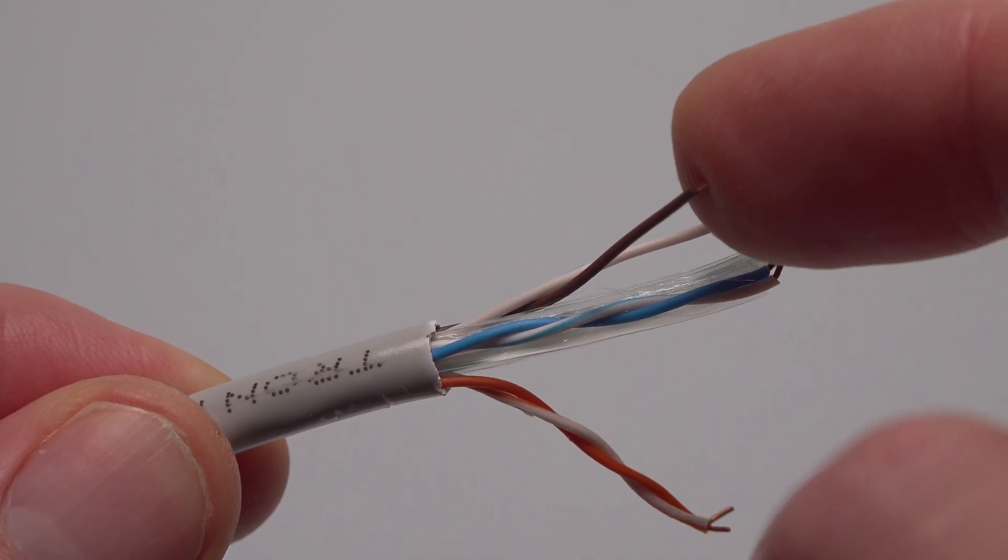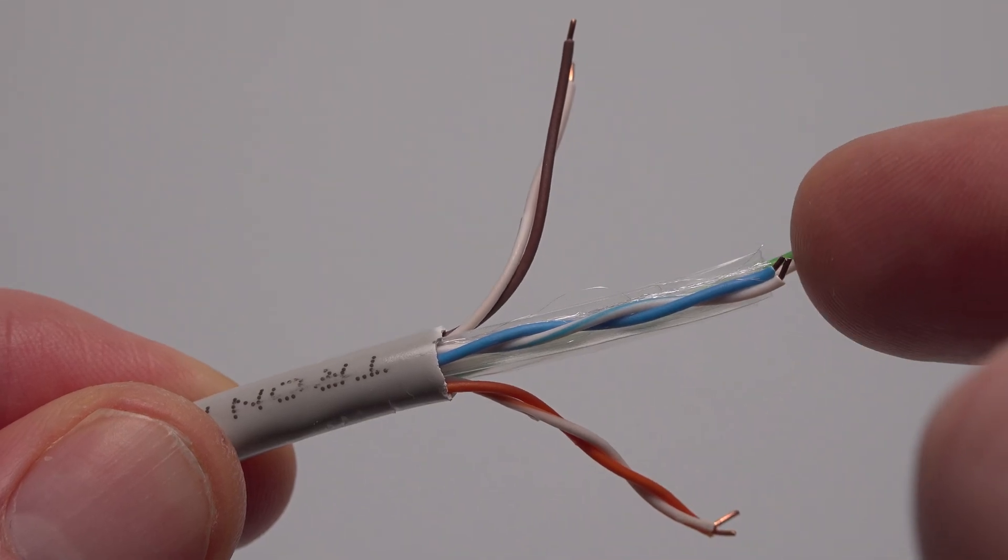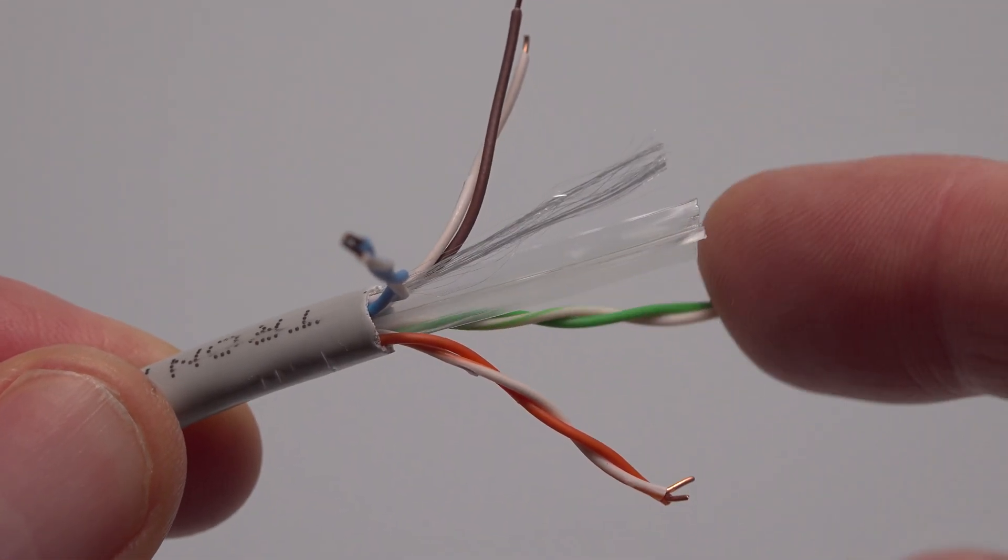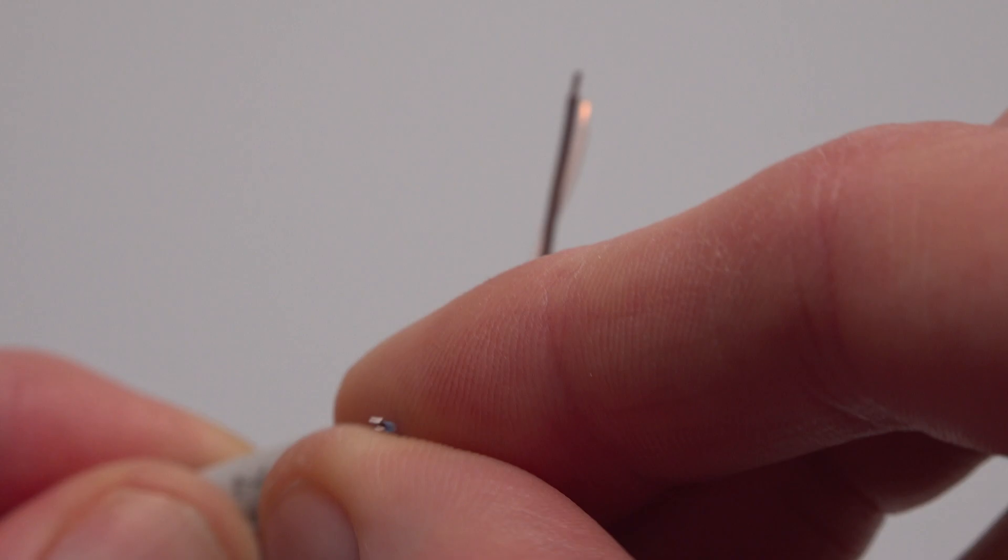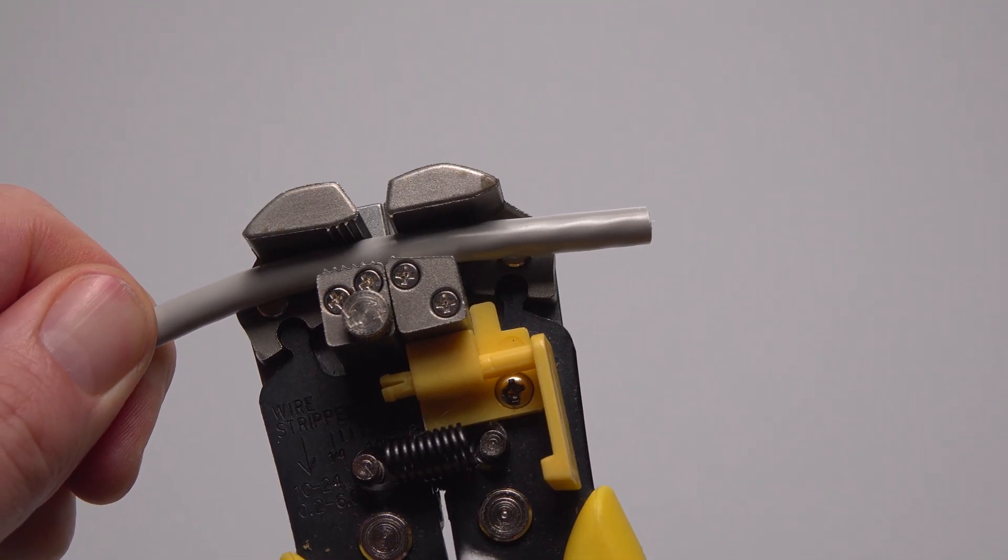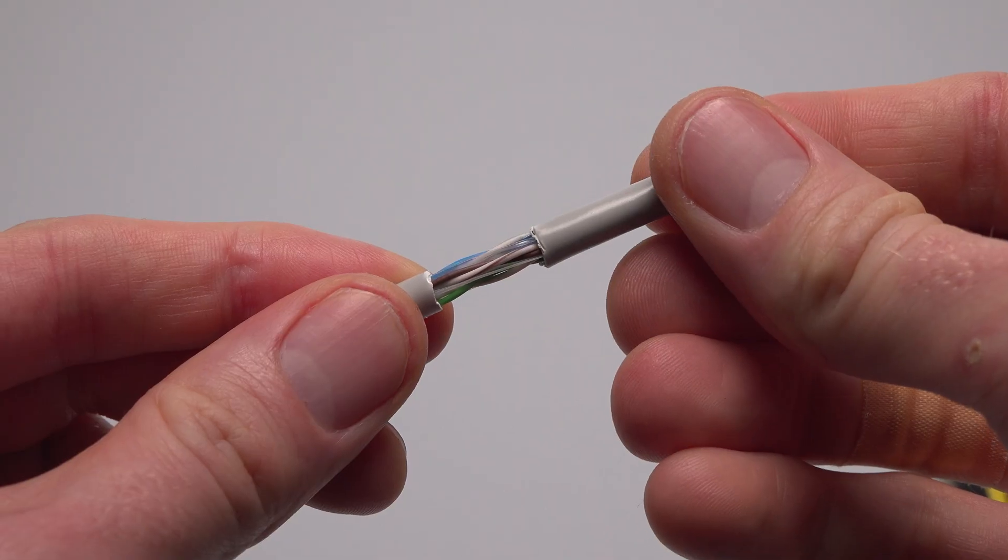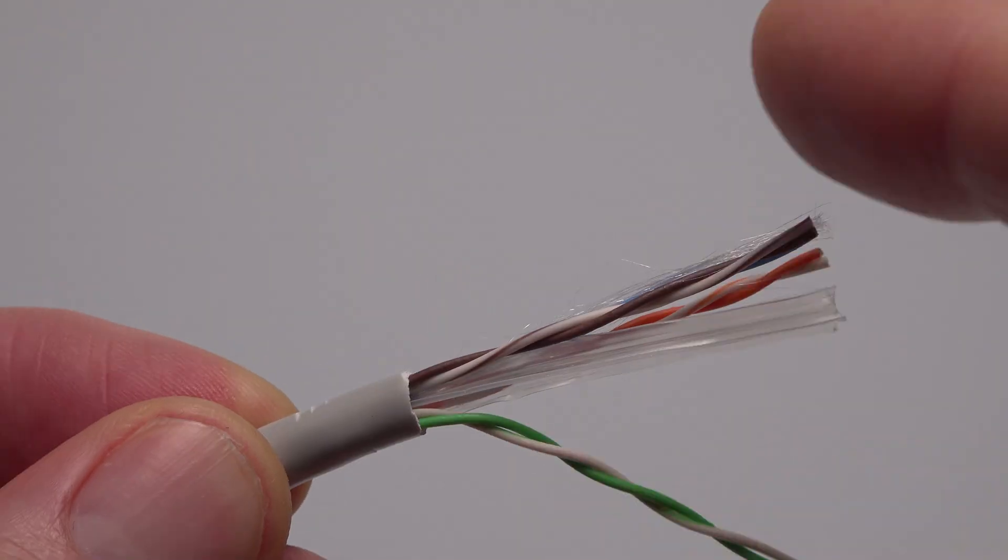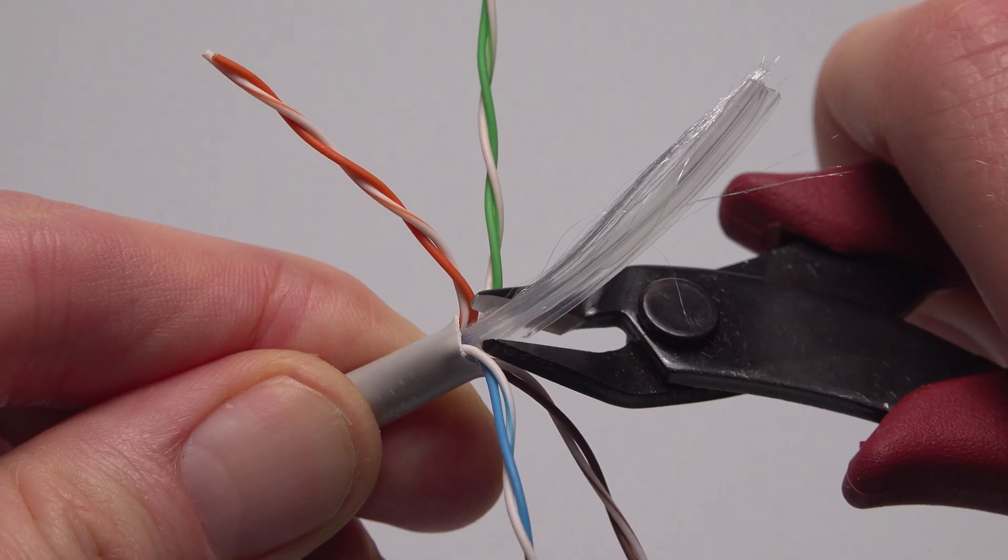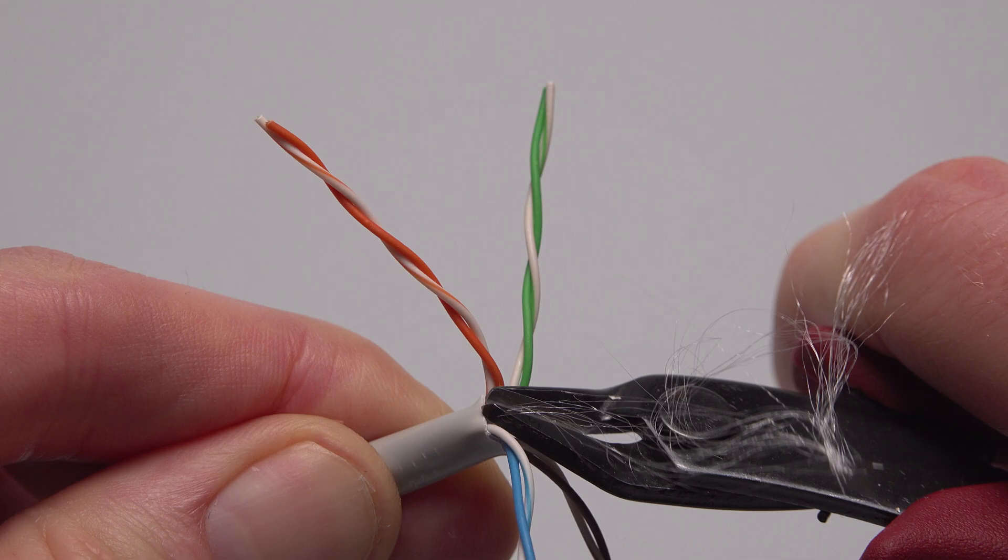Each pair is color coded with one of each pair being a solid color and the other pays homage to the awful joke I made in one of the other network cable tutorial videos on this channel. Strip about two centimeters from the end of the cable, being careful not to damage the conductors inside and then snip off the plastic crosstalk separator and the ripcord thread that both run along inside the cable.